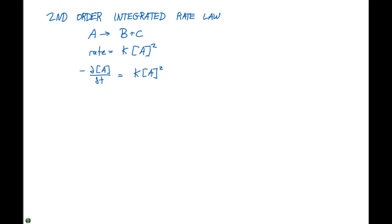So if we rearrange just like we did in the first order case, we're going to get negative dA over A squared is going to equal K times dT.